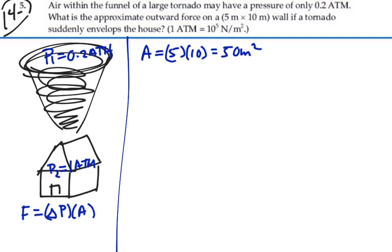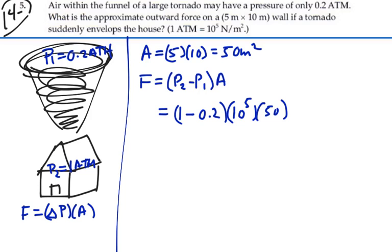Hence, the force is going to equal pressure 2 minus pressure 1, change in pressure, times the area, which will be 1 atmosphere minus 0.2 atm. And we're told to say that 1 atmosphere is 10 to the 5 newtons per meter squared, times the area of the wall. And that is equal to 4 times 10 to the 6 newtons. So that is 4 million newtons of force on that wall. Something you wouldn't be able to withstand.